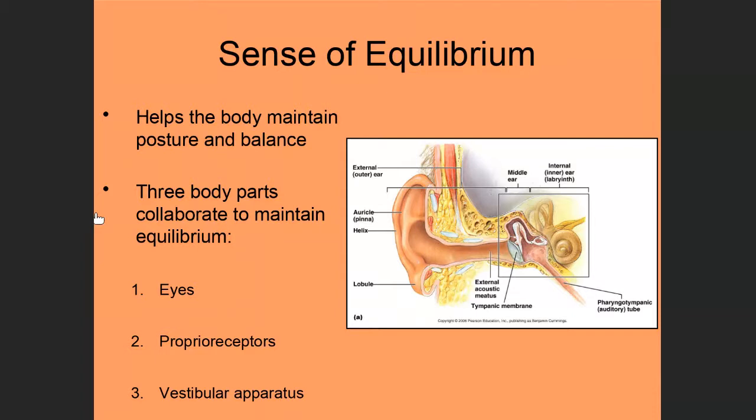So vision, hearing, some of these other senses we can turn off, we can turn on, and that makes us aware that we have them. Equilibrium is a sense that there's really no way to turn off. It's always there. It's always functioning in the background. And because none of us have ever lived without it, it's hard for us to even recognize that we have it, that it's there.